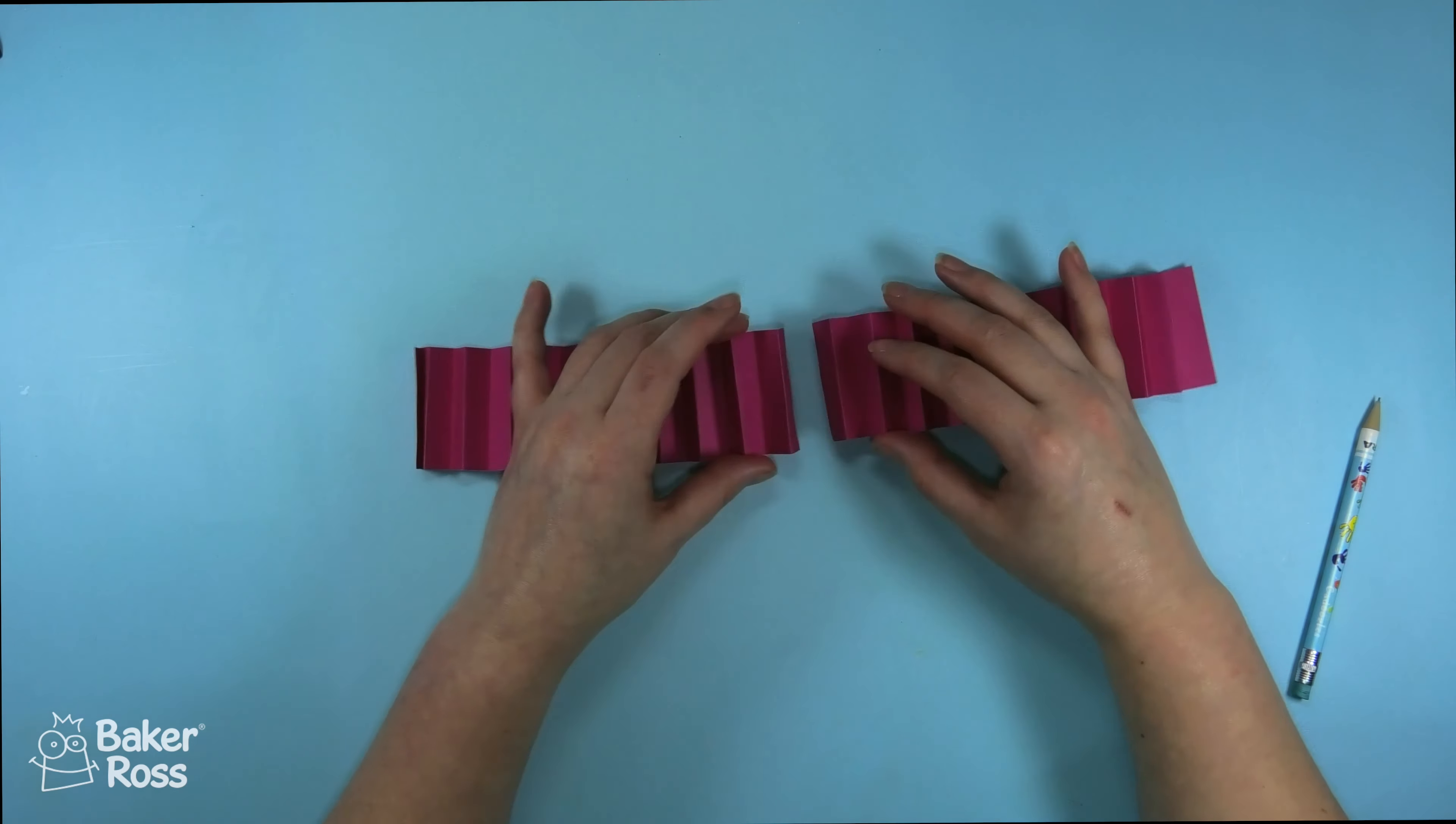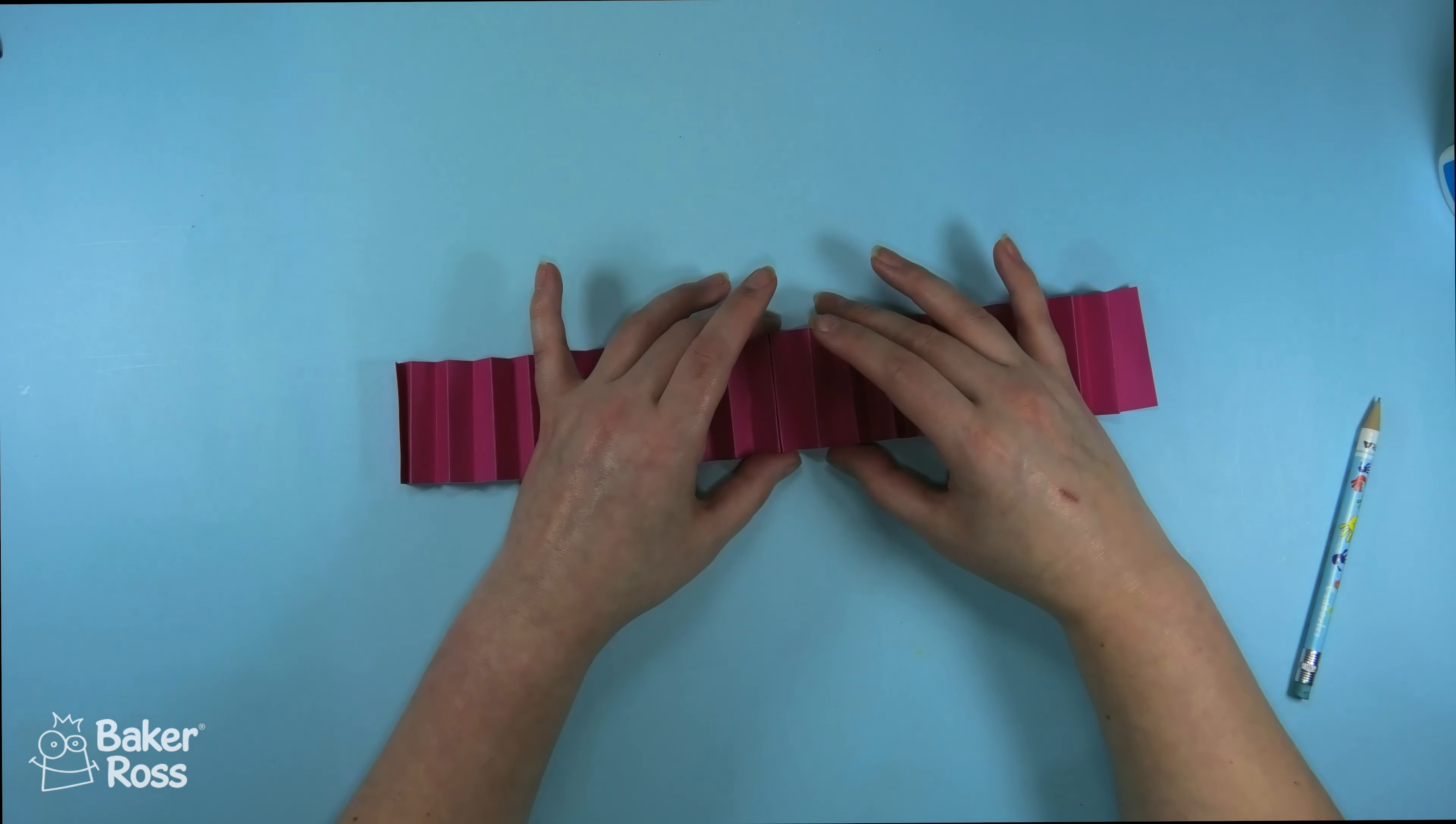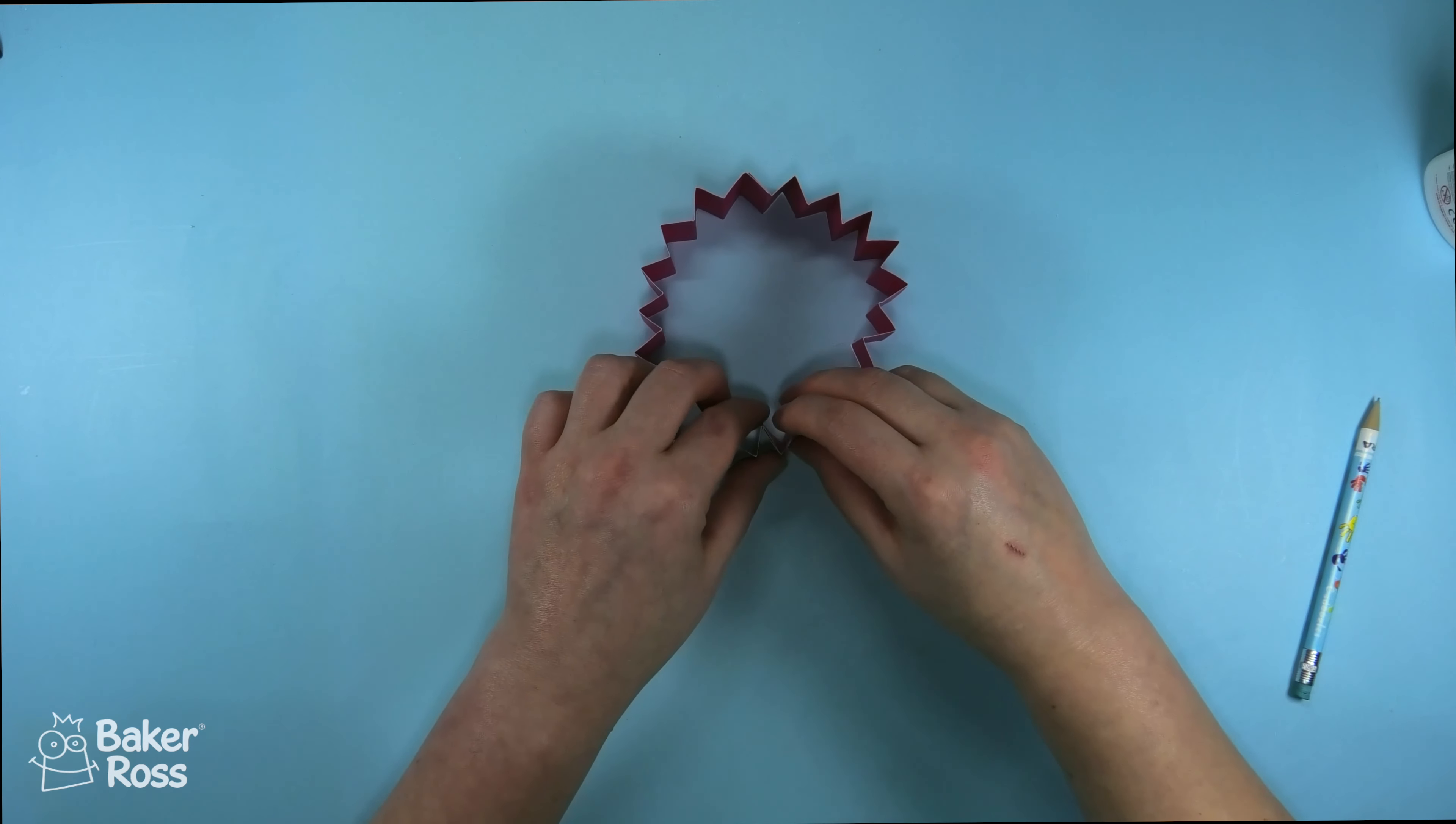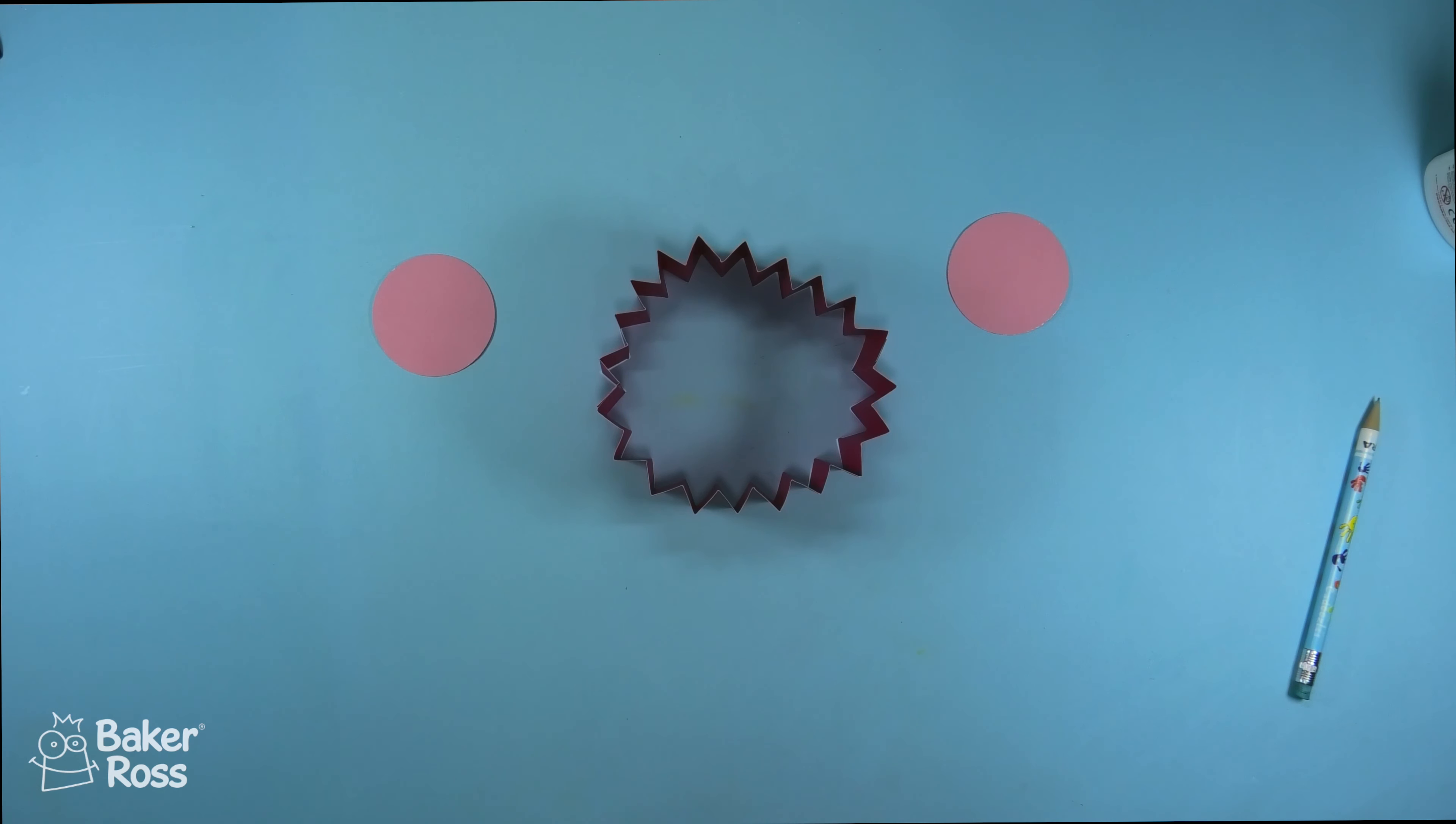Once we have both of them folded it's time to glue them together to make a longer strip. If you have a larger piece of paper of course you wouldn't need to do this. I'm using A4 size paper from a paper pack from Baker Ross so I'm sticking the two pieces together to make it longer and then I'll stick the other two ends together to turn this into a circle. Believe it or not this is going to be the rosette and we're actually almost done with it.